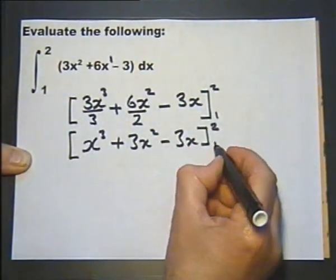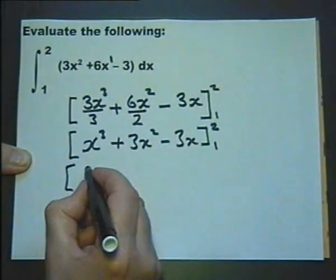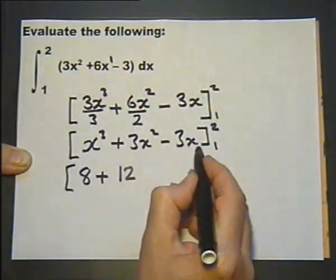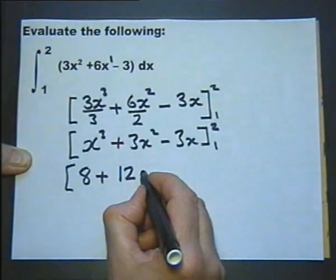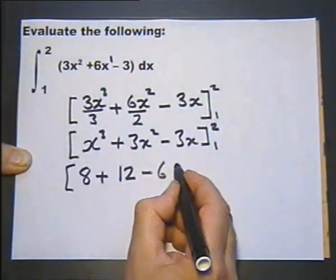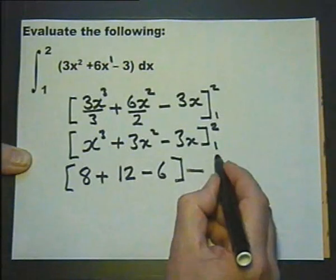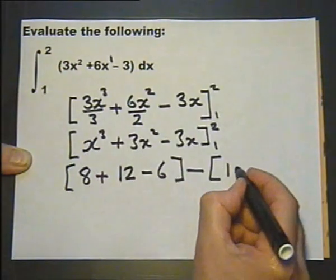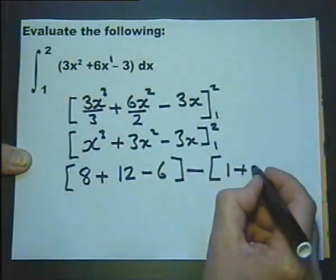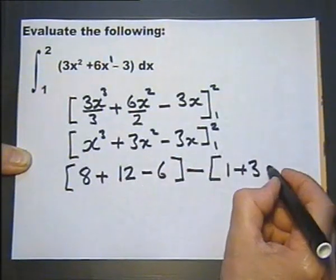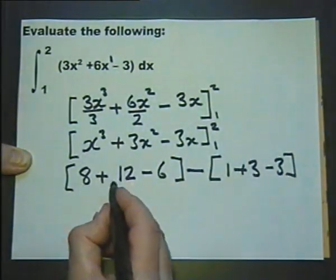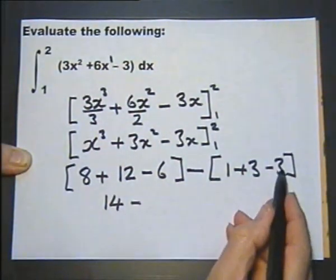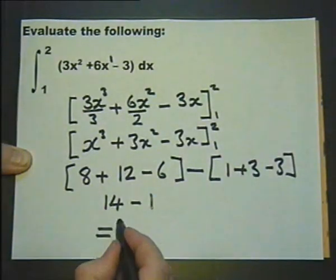So we need to substitute the upper limit of 2. So 2 in here is 2 cubed which is 8, plus 2 squared which is 4, 3 times 4 is 12, minus 3 times 2 is 6, minus substituting in the lower limit. So the lower limit is 1, so that's 1 cubed plus 3 multiplied by 1 squared which is 3 minus 3. So we have here 20 take away 6 which is 14, minus those 3s will cancel so we'll just give us the 1. So we've got an answer of 13.